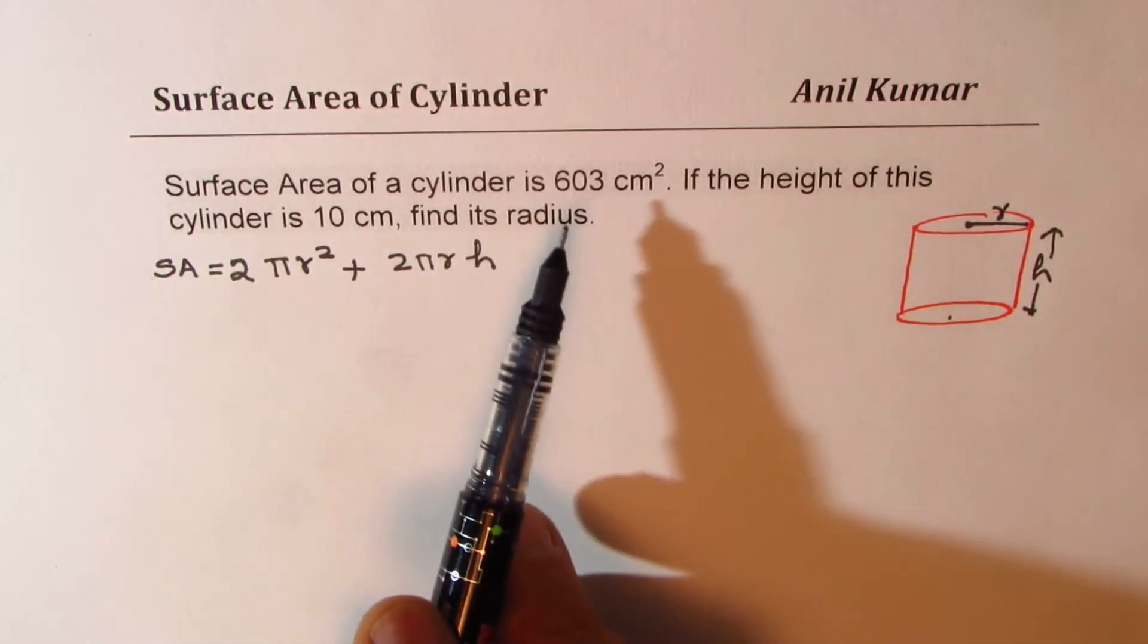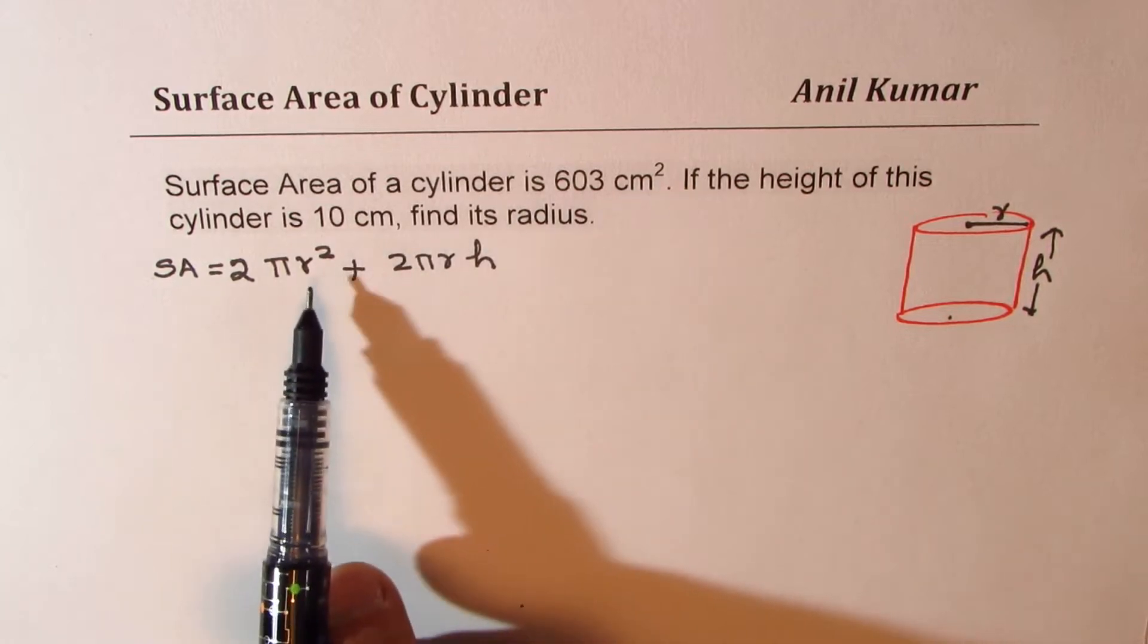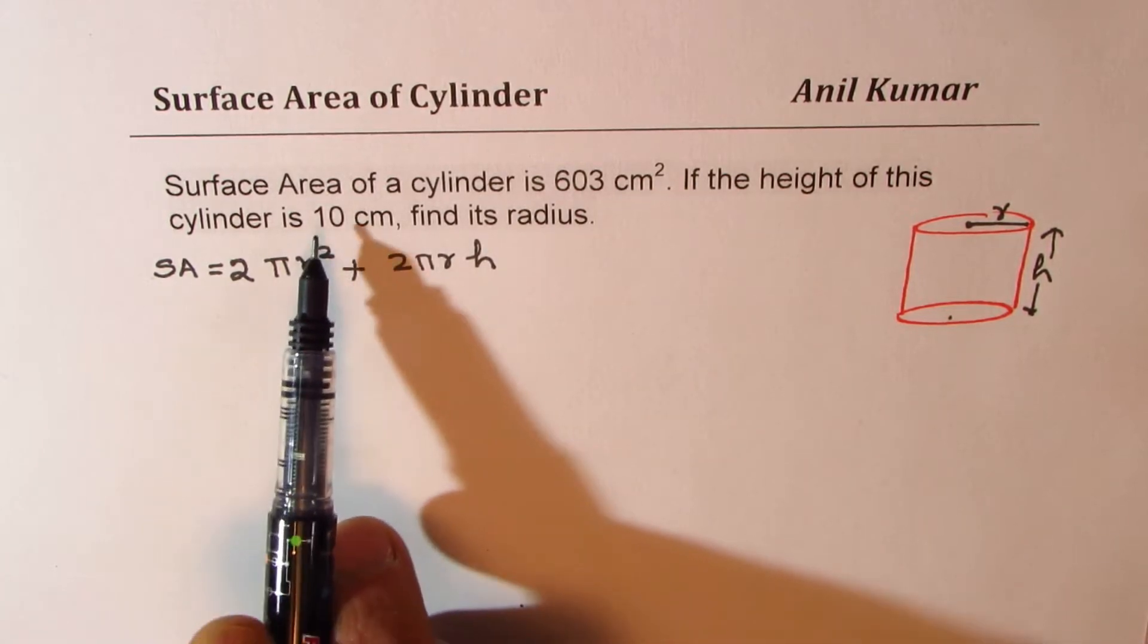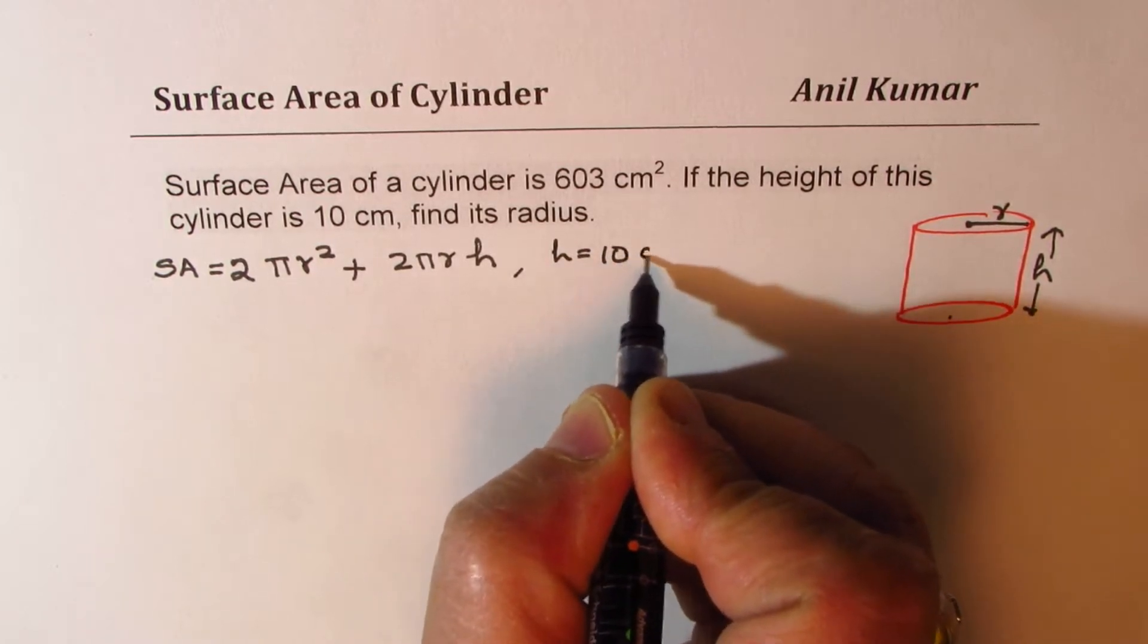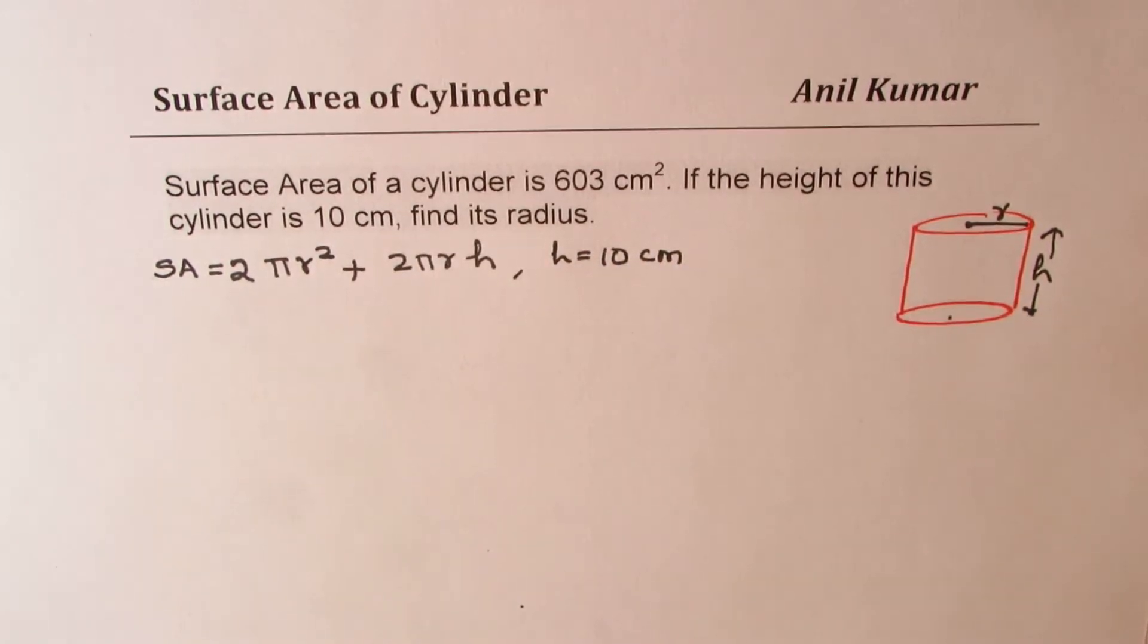We are given this surface area 603 cm². You need to find r when h equals to 10 cm. So h equals to 10. I'd like you to pause the video, answer this question, and then look into my suggestions.